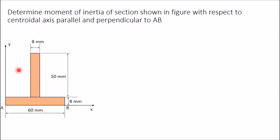Now mark the center points. Divide this composite figure into two areas: area one is this rectangle and area two is this rectangle. Mark the center points of these two rectangles — these are the centroids of area one and area two.